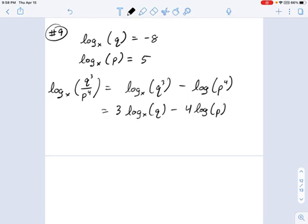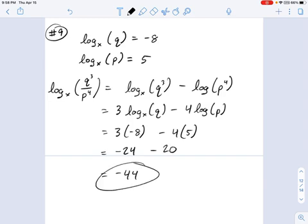What's log of q? Well that's negative 8. So this is 3 times negative 8 minus 4 times what's log of p? That's 5. So this becomes negative 24 minus 20. So the answer in this case would be negative 44.